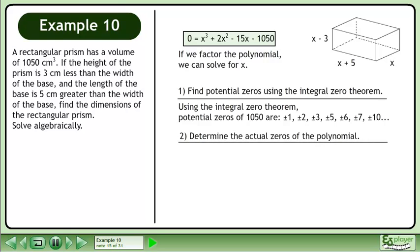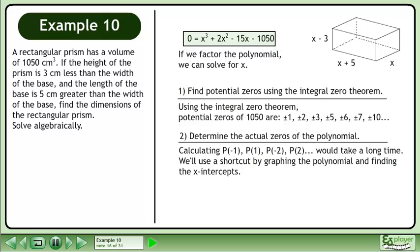Next, determine the actual zeros of the polynomial. Calculating P(1), P(2), P(3) and so on would take a long time. We'll use a shortcut by graphing the polynomial and finding the x-intercepts.